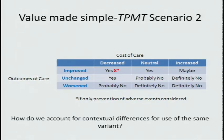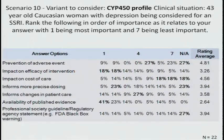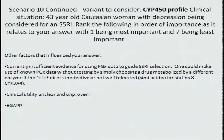So how do we account for contextual differences in use of the same variant? For CYP450 profiling — a 43-year-old Caucasian woman with depression being considered for an SSRI — only 3% said definitely yes, 13% probably yes, so under a quarter total. A majority said probably or definitely not. The most important factor cited was availability of published evidence, and EGAP was prominently mentioned. Comments included: evidence is insufficient to guide SSRI selection; one could make use of pharmacogenomic data without testing by simply choosing a drug metabolized by a different enzyme; and EGAP — that's essentially the single answer.